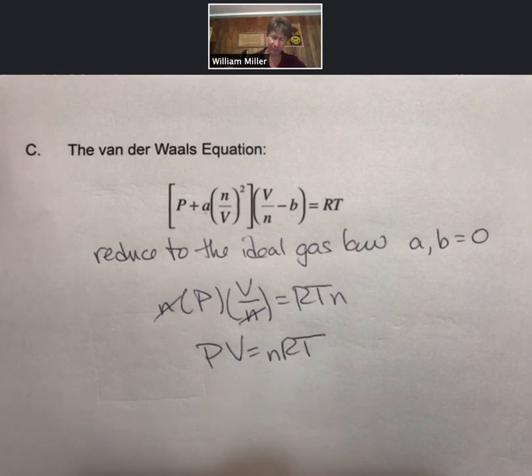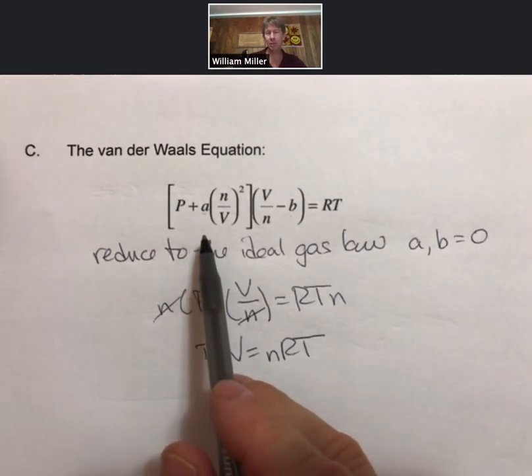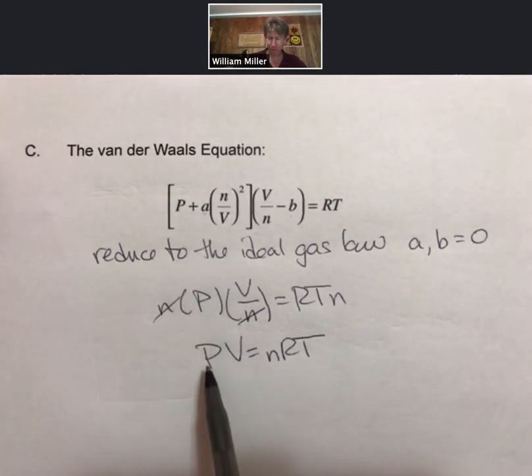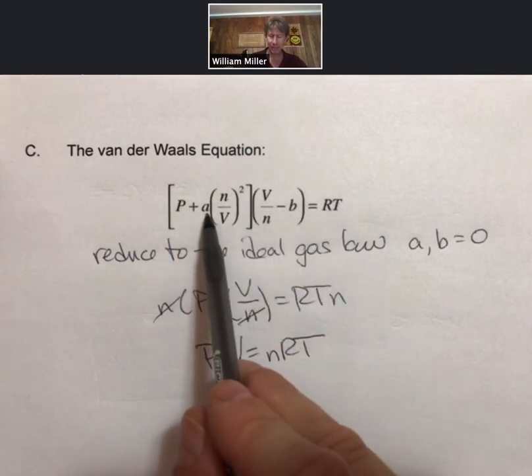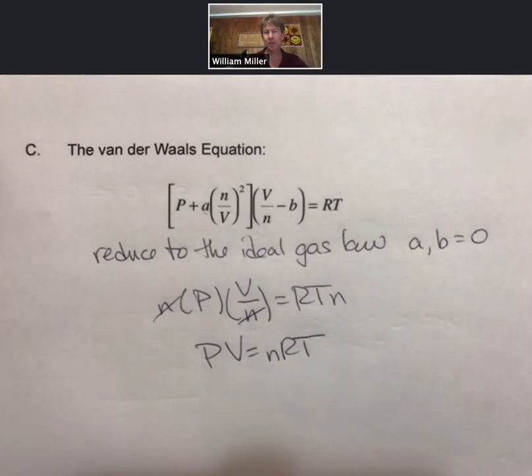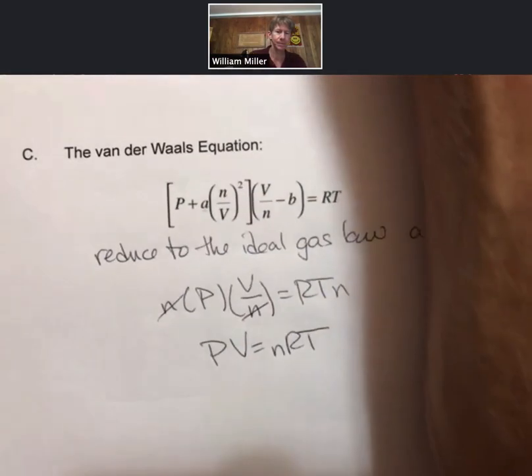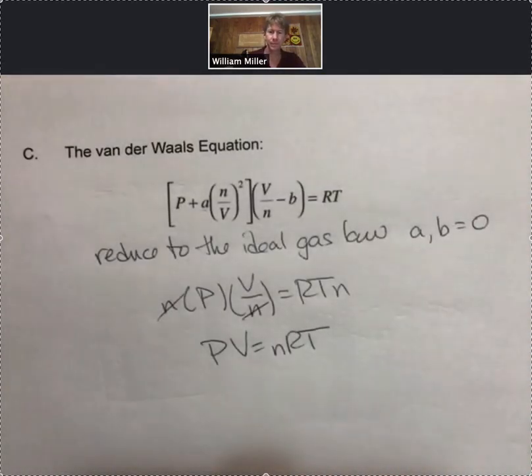And those constants are empirically determined, meaning they actually measure pressure, volume, and temperature for gases, and then they fit them to an equation and figure out what A and B are. So let's do this now.